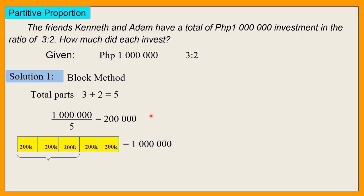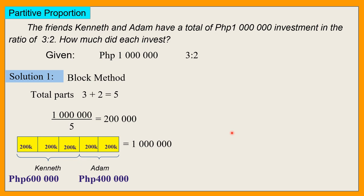3 parts ang kay Kenneth — Kenneth dito ay may investment na 600,000 pesos. 2 parts ang para kay Adam — 400,000 pesos naman for Adam.